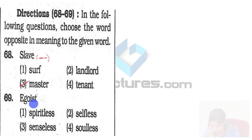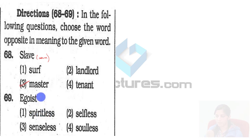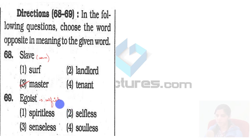'Egoist' means a person who thinks he or she is better than others and talks about himself or herself. This is a selfish kind of person — one who thinks he is superior to others. So the antonym of egoist is going to be 'selfless.'